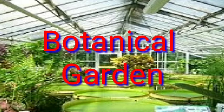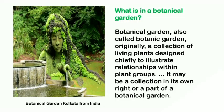As the name itself indicates, botanical is about plants, and garden is a place where the plants are grown. We shall see what is a botanical garden, how it is managed, how it is controlled. A botanical garden, also called botanic garden, is originally a collection of living plants designed chiefly to illustrate relationship within plant groups. It is a place where various types of plants are grown, and it may be a collection in its own right or a part of a botanical garden. There is no fixed rule for framing a botanical garden; one organization or body can make its own botanical garden.